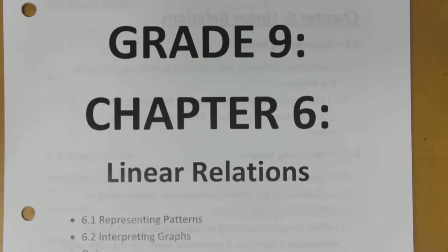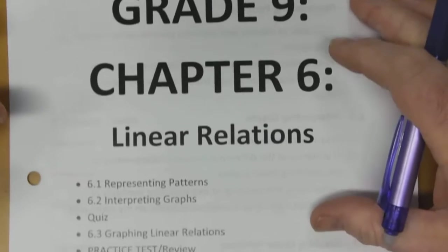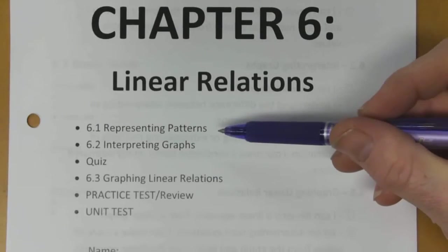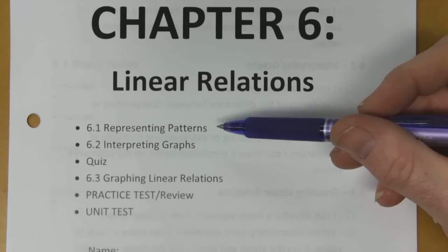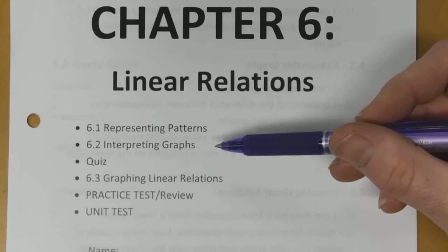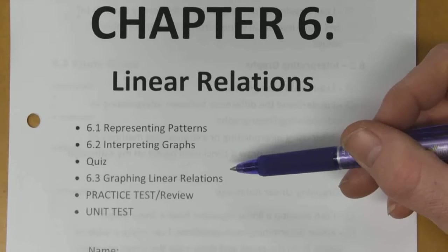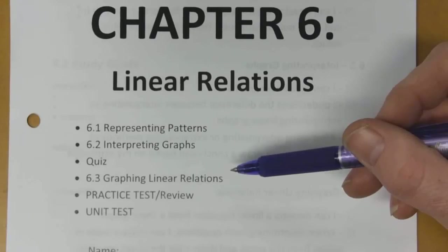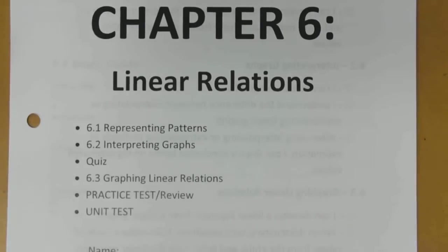We're starting Chapter 6 now, which is Linear Relations. It's a fairly short chapter — we have three sections. Representing Patterns is the first section, which we'll do today. 6.2 is Interpreting Graphs, then we'll have a little quiz. And then 6.3 is Graphing Linear Relations, and then that's it for the chapter. We'll do some review and then wrap up with an exam.